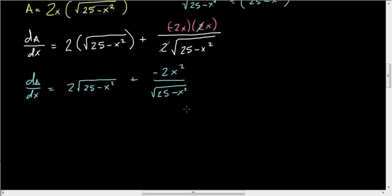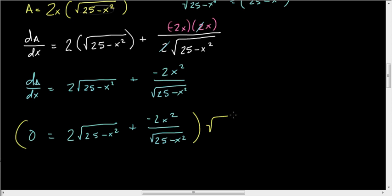And now we want to find out when that is 0. So 0 equals all of that. To clear the fraction, I'm going to multiply everything by the square root of 25 minus x squared. The good thing here is I don't have to worry about problems with domain.